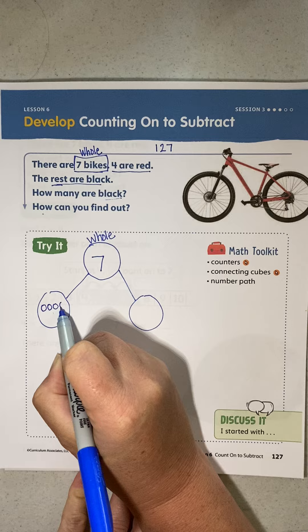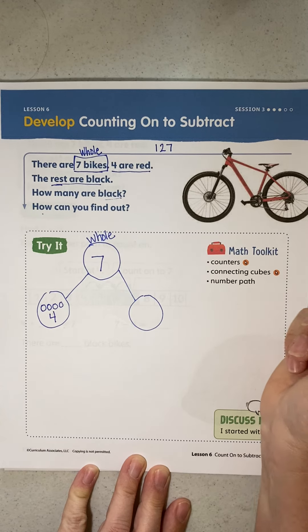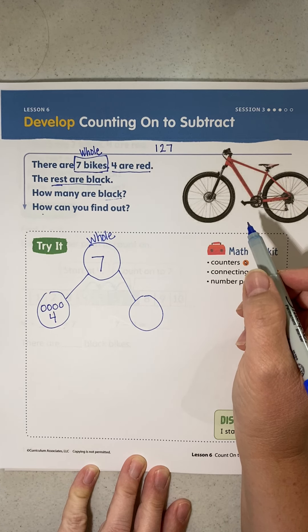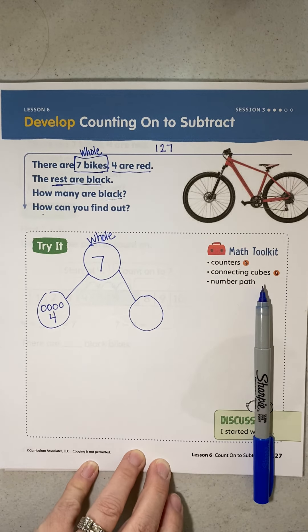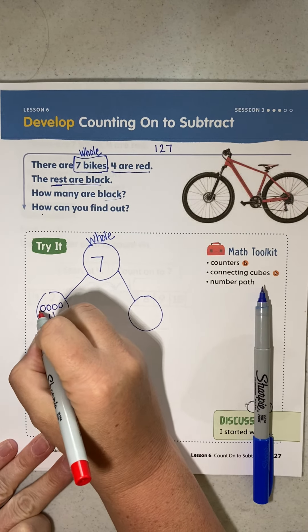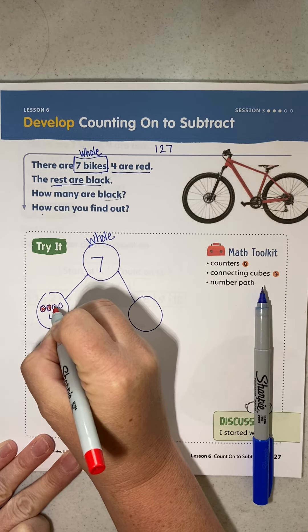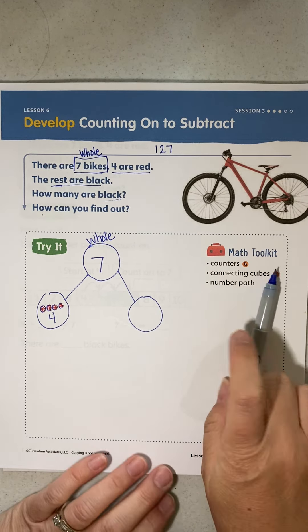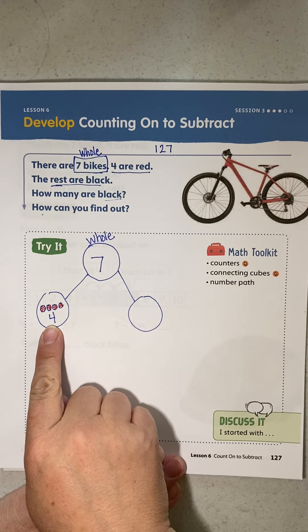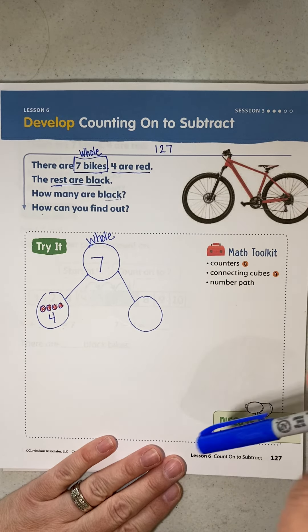One, two, three, four - four of those are red. Okay, how many are black? So these are red. Okay, how many are black? Let's count on.